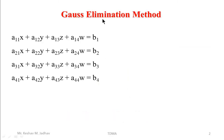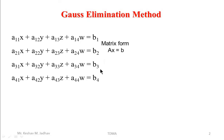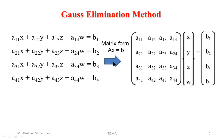In the previous video we have seen how to solve problems based on the Gauss elimination method. Let us consider a general set of linear simultaneous equations. In Gauss elimination method, first we write this set of equations into matrix form Ax = b.